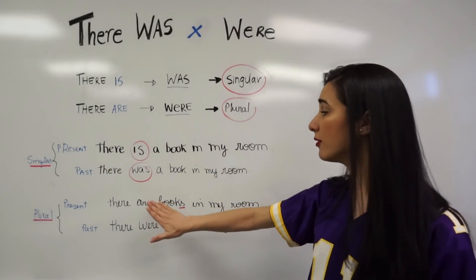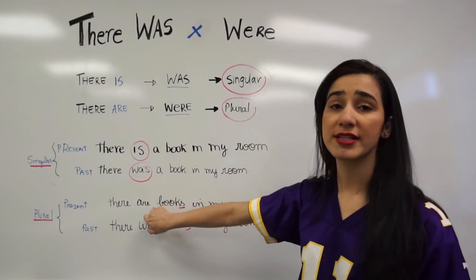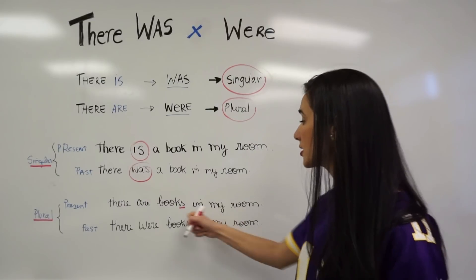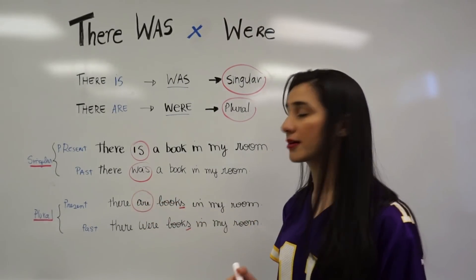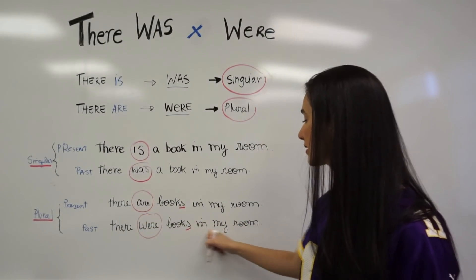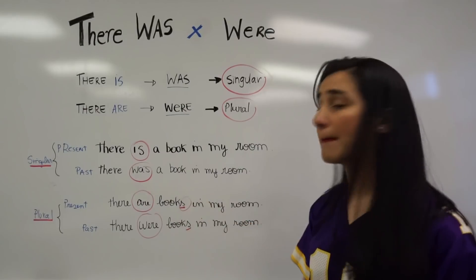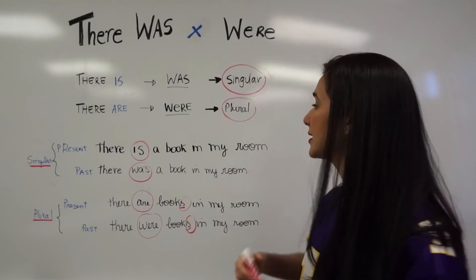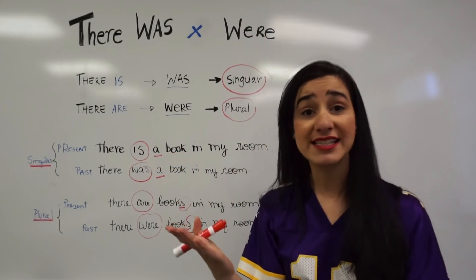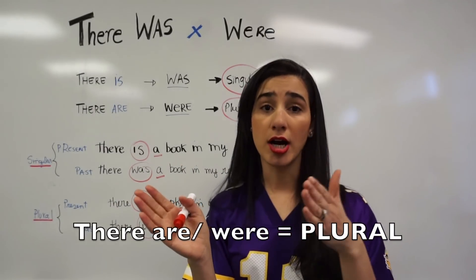Now if we're talking about plural, we use 'there are' for present and 'there were' for past. So: 'There are books in my room' — present — and 'There were books in my room' — past. You can see 'books' is plural, while in the singular example we said 'a book,' just one book.